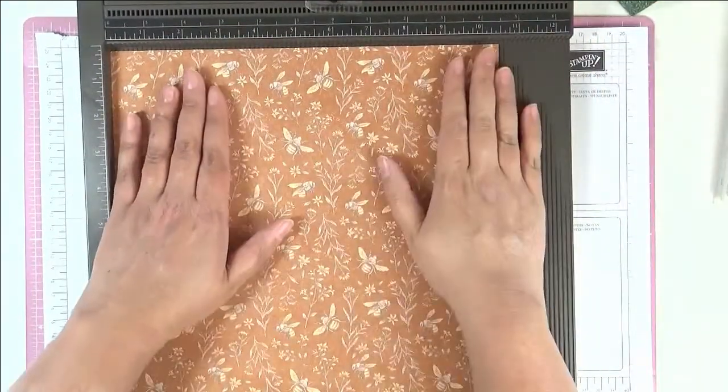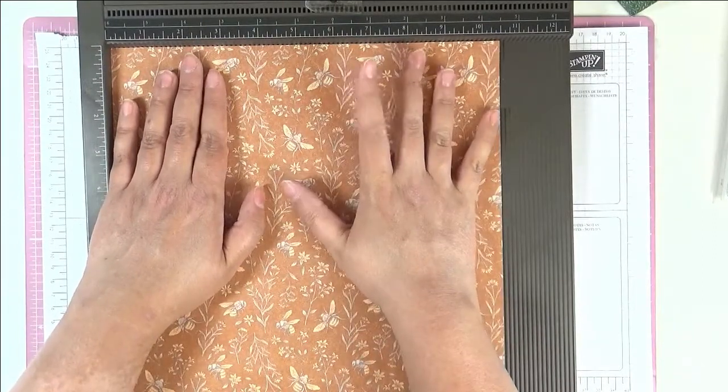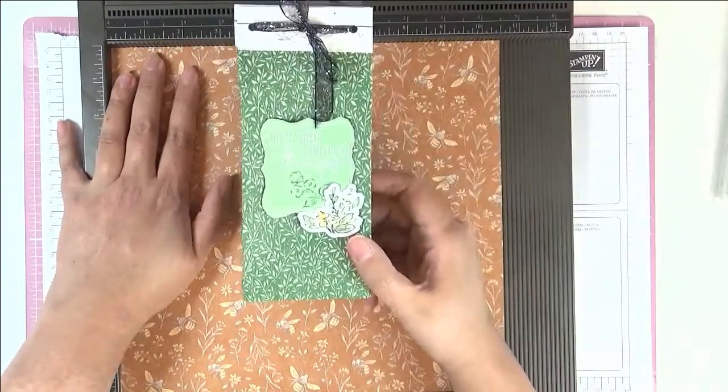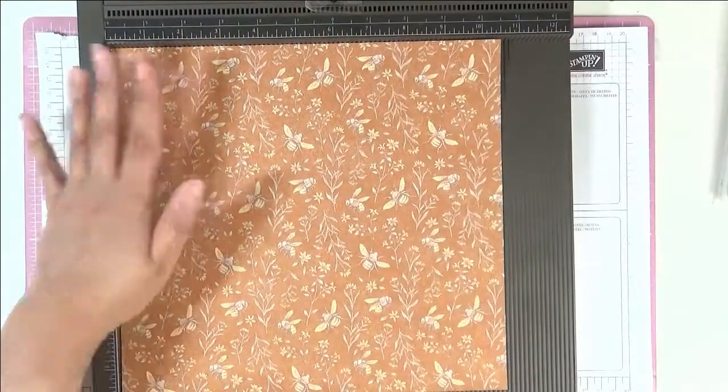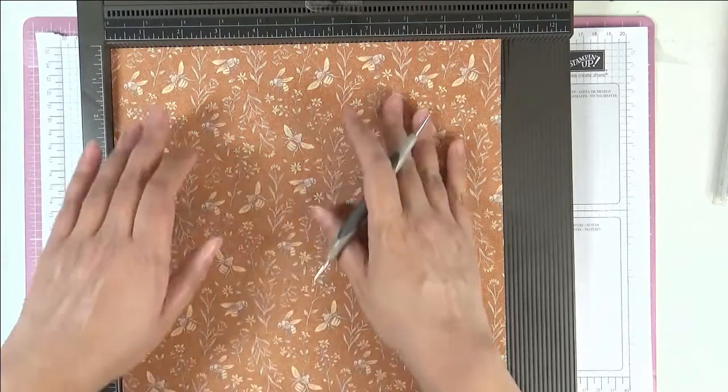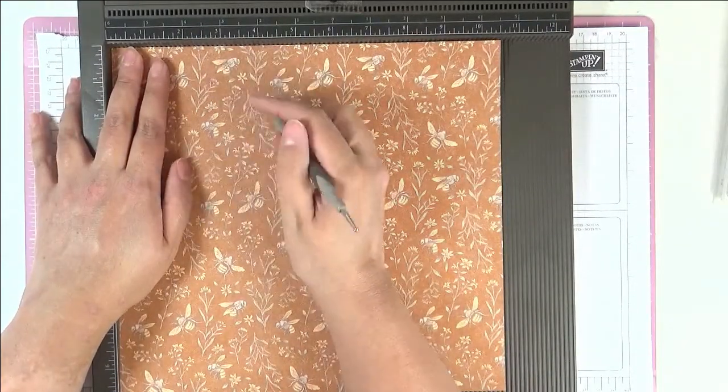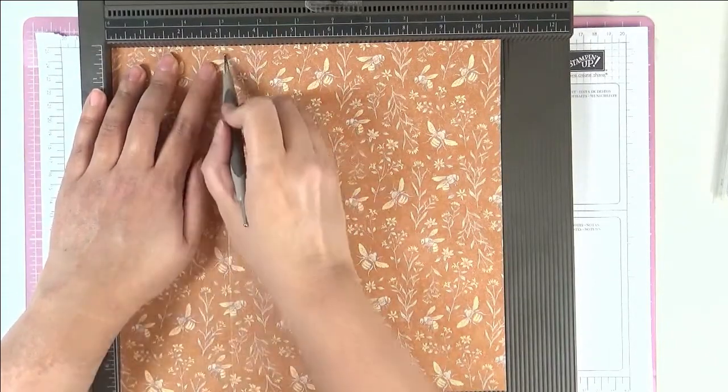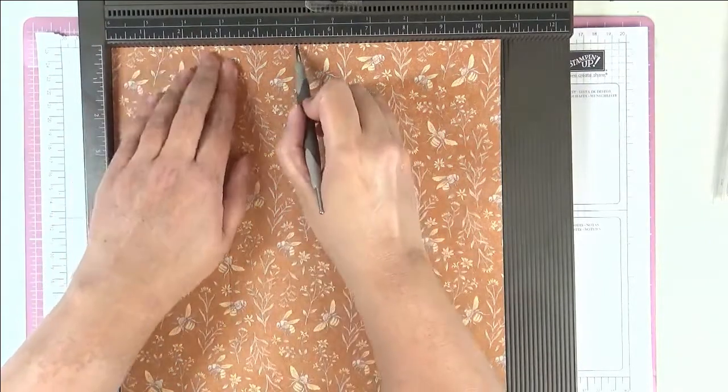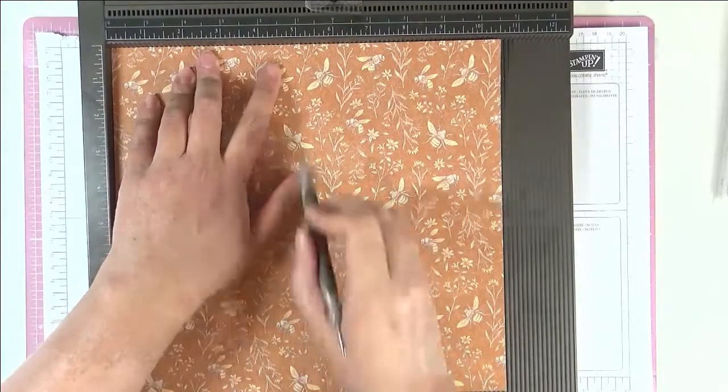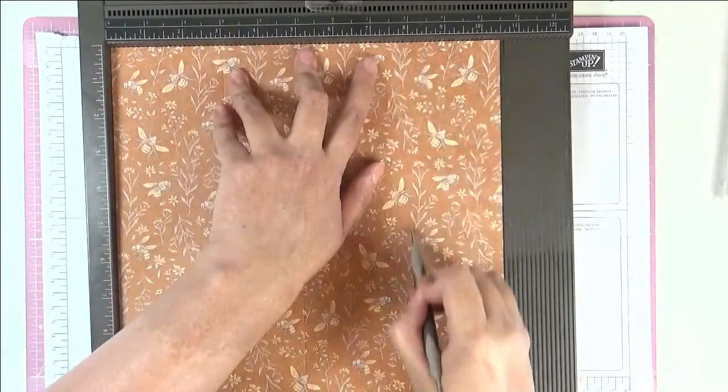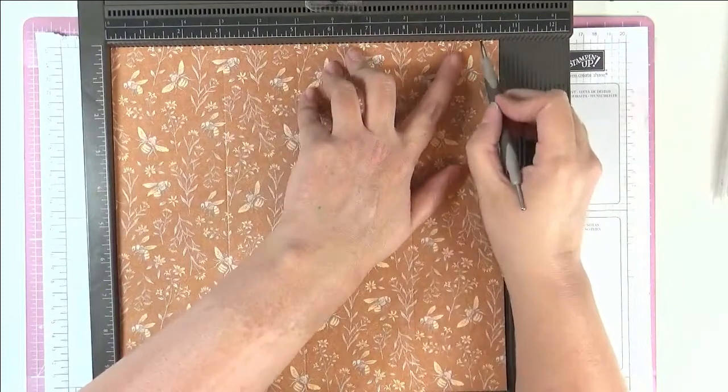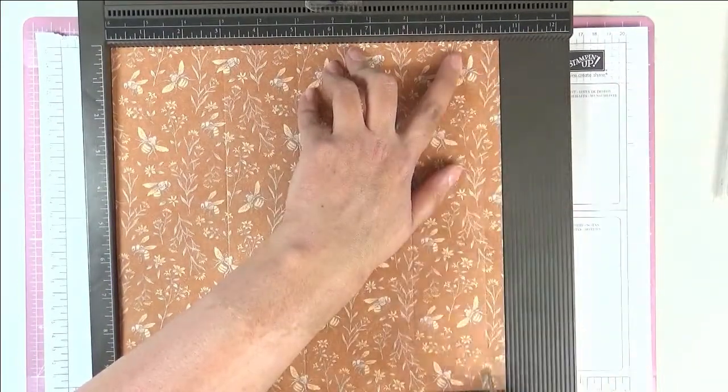I have another piece of the same designer series paper from the same collection, I should say. This is the Heart and Home and this one measures ten and a half inches by ten inches. This is also just another pattern from the same collection. So I loved all these bees. We're gonna score now, and because this paper, just be a bit more gentle with your scoring. We're gonna score at three inches, so just rather go for more than once than digging into the paper. So three inches, five inches, and then eight inches, and then ten inches.